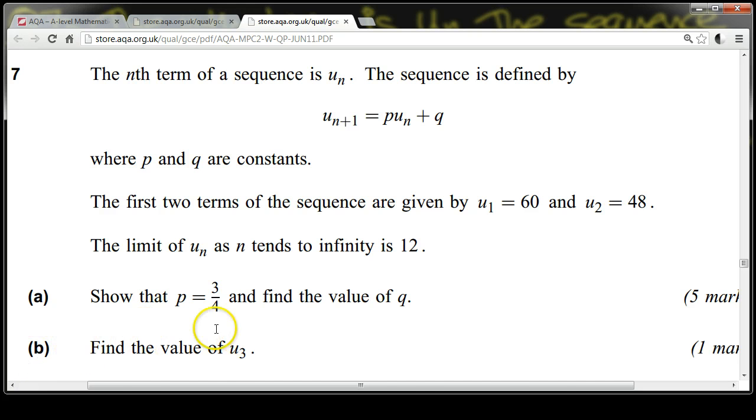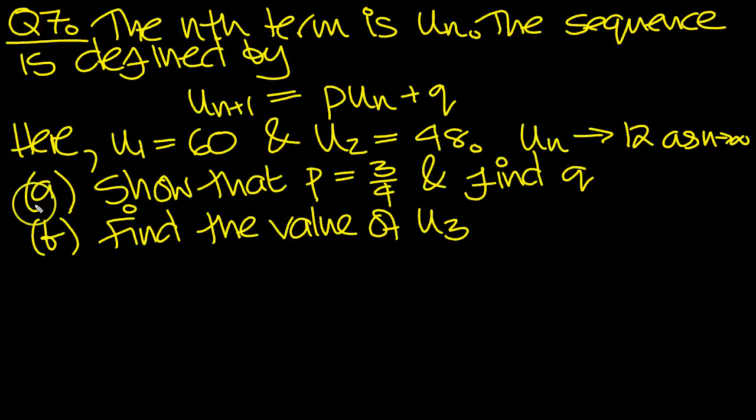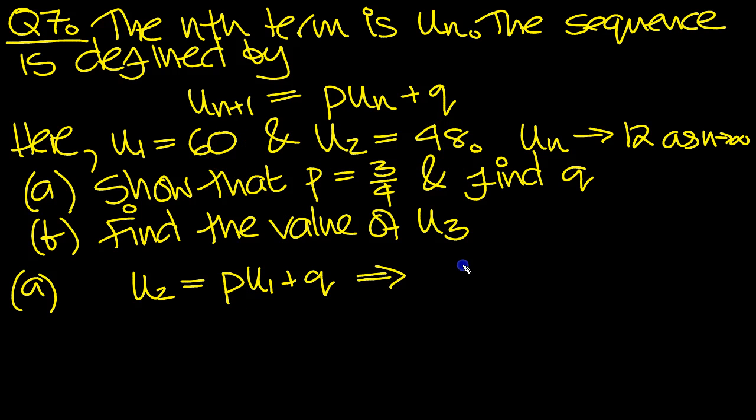Part b asks to find the value of u3. Let's have a look at this. Let's put these two pieces of information in first. So u2 is equal to pu1 plus q. That tells us that u2 is 48, which equals 60p plus q.